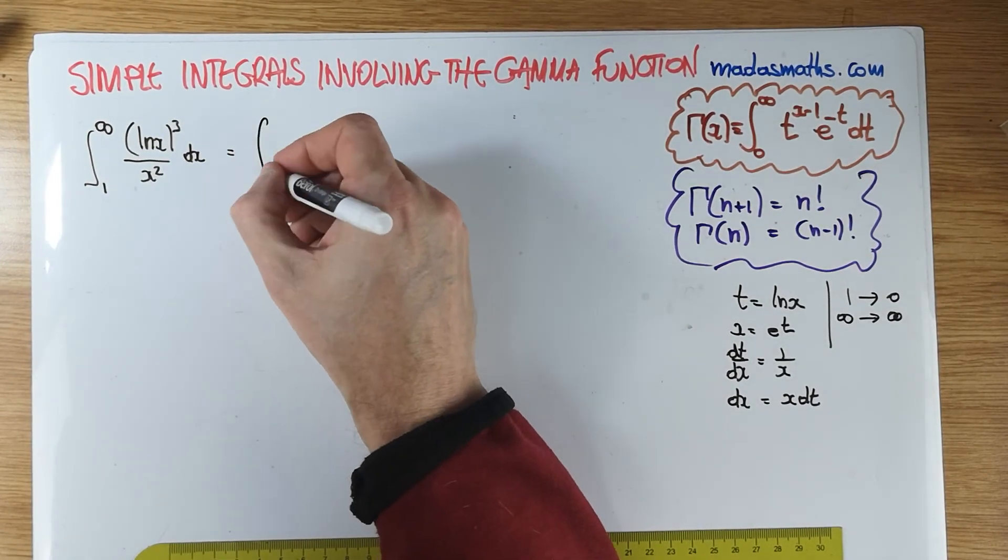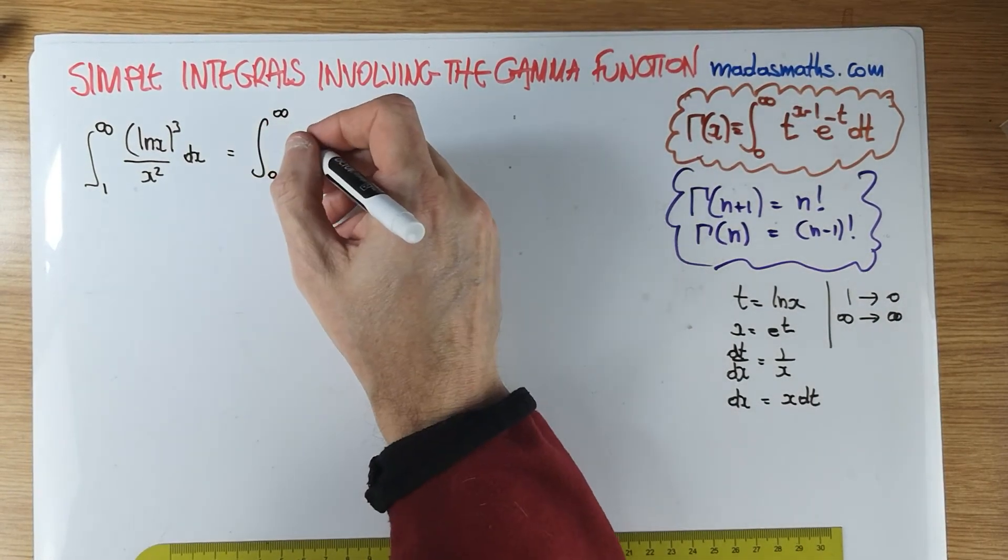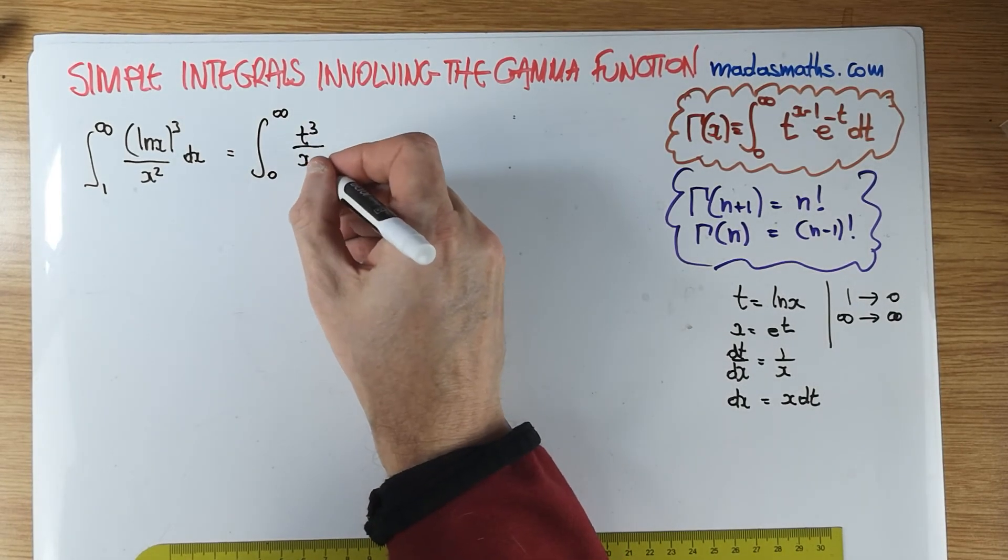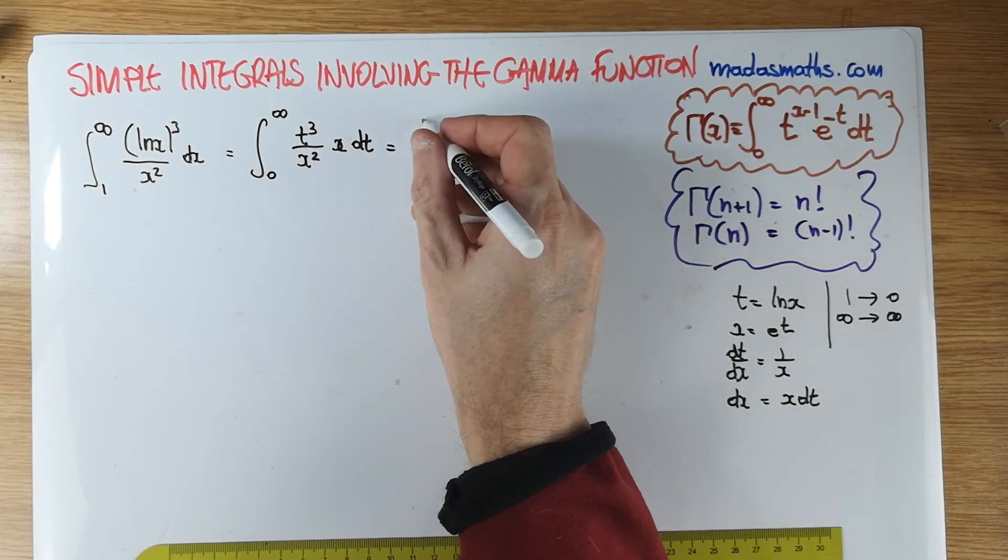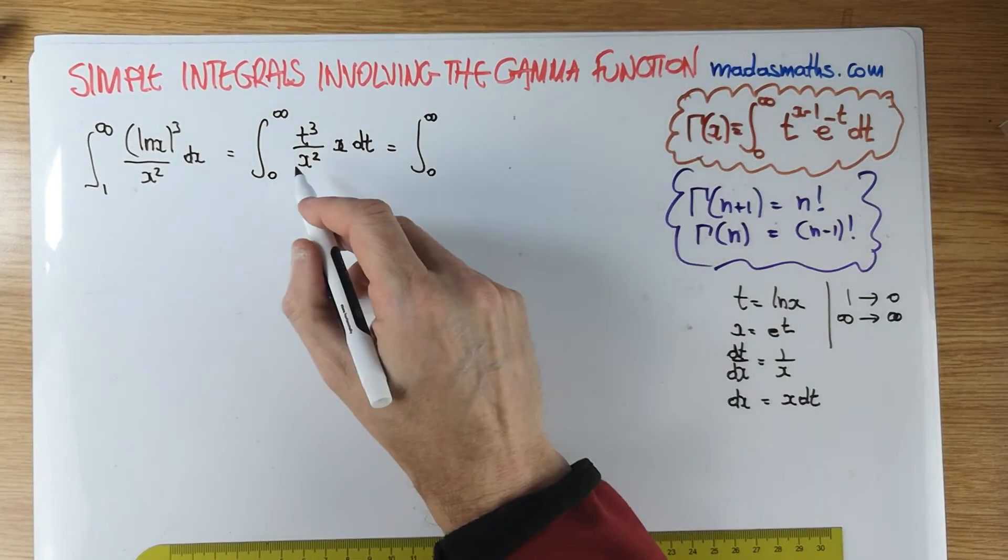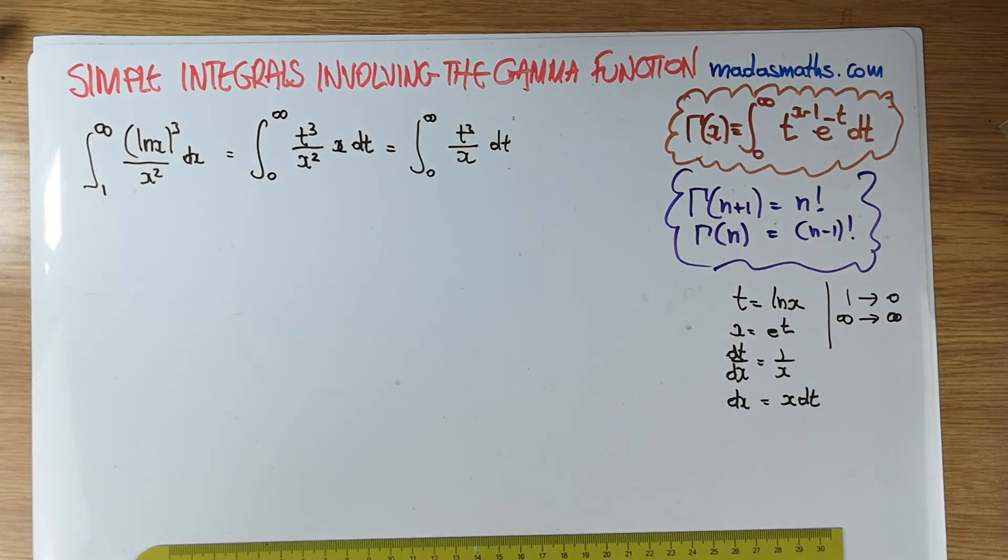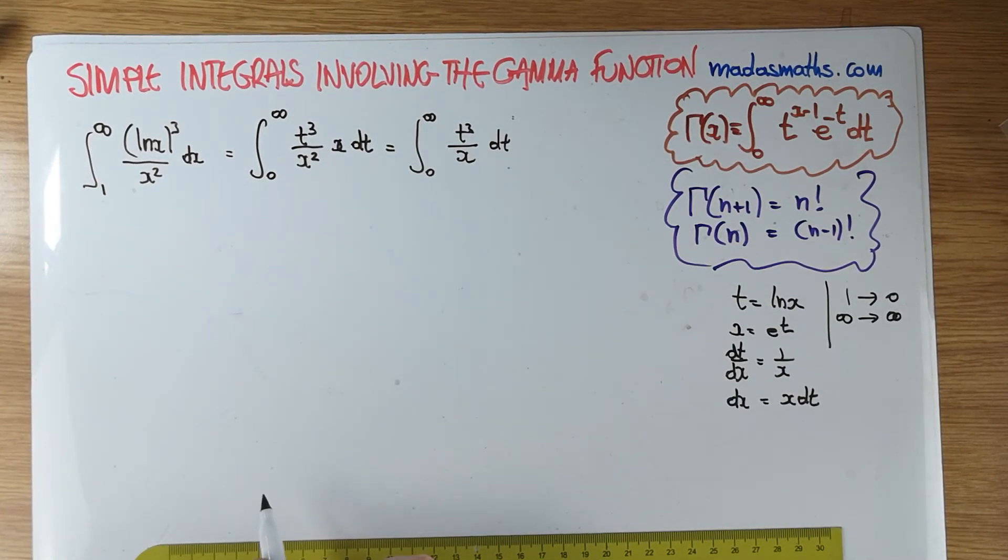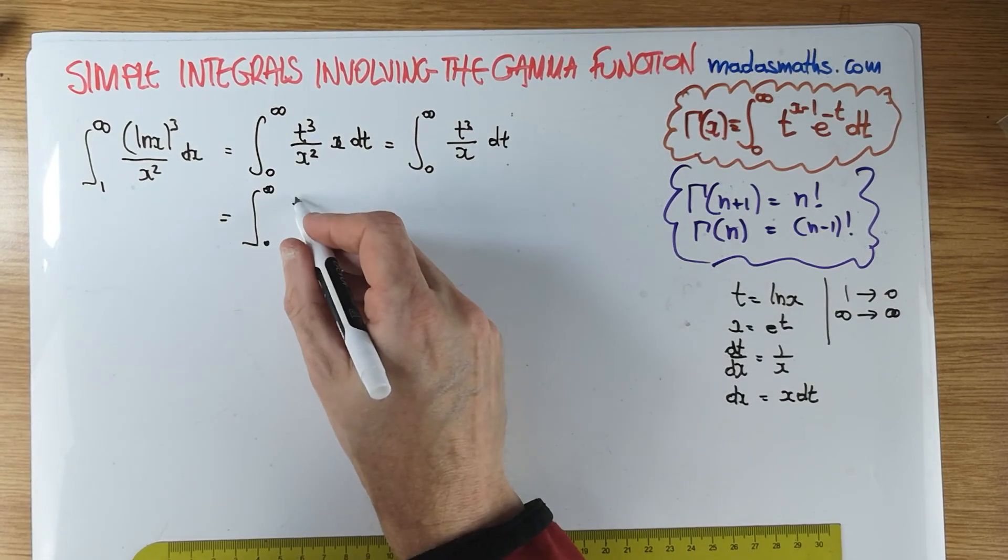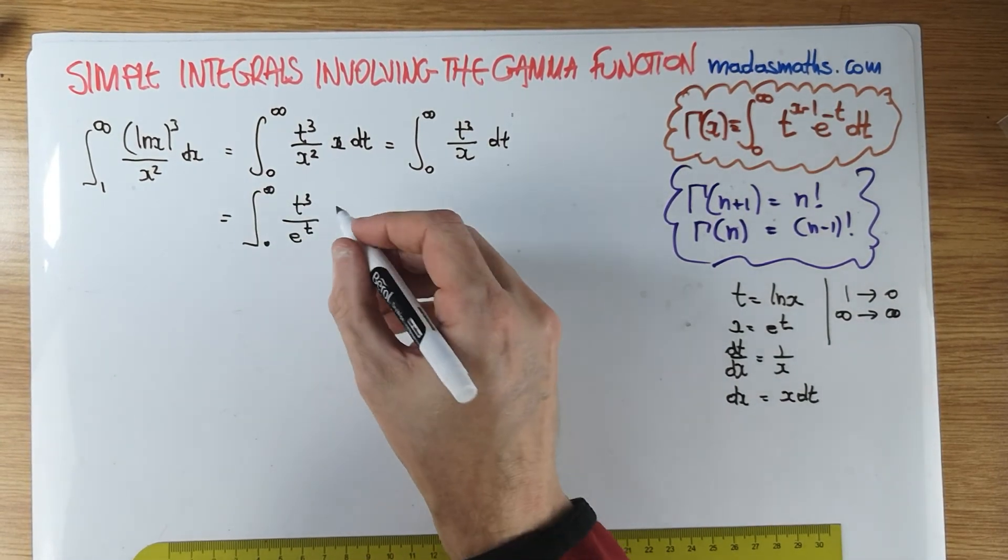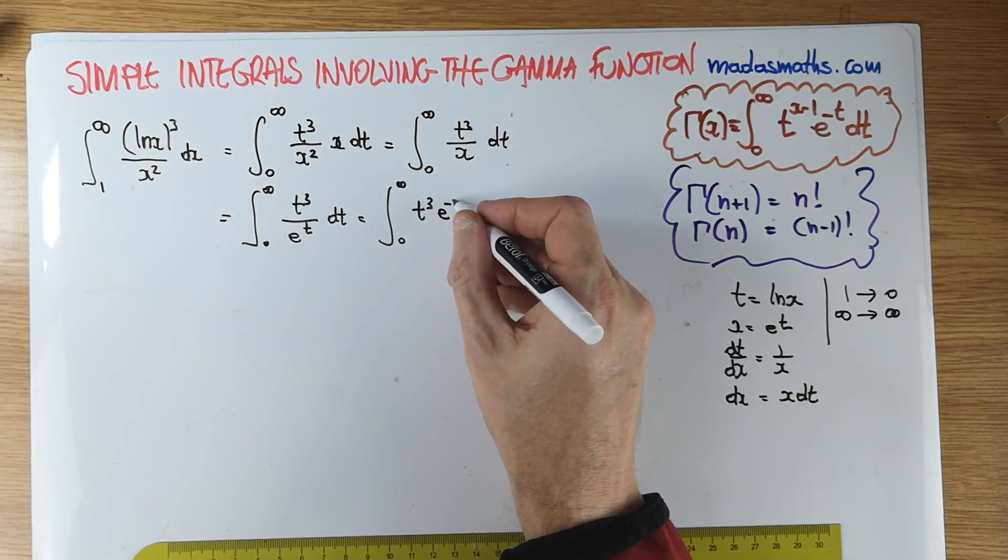So this is what will happen now to this particular integral. We're going to have 0 to infinity. The log of x is going to be t cubed. We're going to have 0 to infinity. The dx is going to be x dt. And tidying this up, we're going to have t cubed over x dt. We still need to lose this x. And x is e to the t. So 1 over x, as we have it at the bottom, let me just put the extra line there. We have 0 to infinity t cubed over e to the t dt, which of course is 0 to infinity t cubed e to the minus t dt.